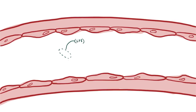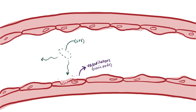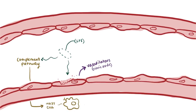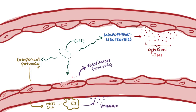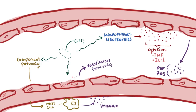First, LPS molecules directly damage endothelial cells and cause them to release vasodilators like nitric oxide. They also activate the complement pathway in the blood, which stimulates mast cell release of histamine, another vasodilator. The LPS molecules also activate immune cells like macrophages and neutrophils, which help create pro-inflammatory cytokines like tumor necrosis factor and interleukin-1. These help the immune system destroy the invaders, but they also stimulate endothelial cells to release more inflammatory molecules like platelet-activating factor and reactive oxygen species. All of these inflammatory chemicals damage the endothelial cells and increase their vascular permeability, making the blood vessels leaky.